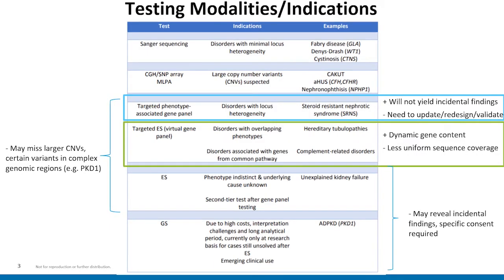The authors begin with a basic description of genetic testing modalities and their applications. This table provides a summary and includes the indications for which each method might be best utilized. Sanger sequencing is most appropriate when there is a high degree of suspicion for a condition that's only known to be associated with a single gene. Some specific examples would include Fabry disease or cystinosis. Array and MLPA technologies are used to detect copy number variants, which are deletions or duplications of variable sizes. Certain conditions and specific genes are more likely to involve CNVs, including those associated with congenital anomalies of the kidney and urinary tract.